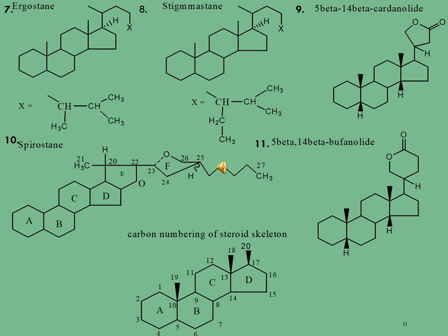Molecule number nine is cardenolide, with a total of 23 carbon atoms. Cardenolide is isolated from the Apocynaceae and Moraceae families and is also found in butterflies and sugar derivatives. This molecule is soluble in diethyl ether and methanol. It is used as an anti-leukemia agent and is a toxic cardiac-arresting compound; it inhibits potassium and sodium ion concentrations in and out of the membrane.